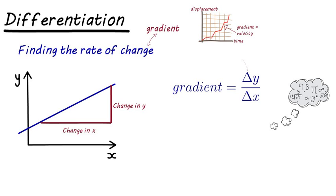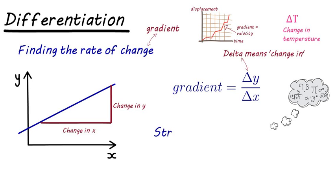I've written it here as delta y over delta x. That's a capital delta and it means 'change in'. You should have come across that in science — delta t for change in temperature. It just means the same thing here. So if we have a straight line graph, we don't need any fancy differentiation. It's nice and easy because it is a constant rate of change.